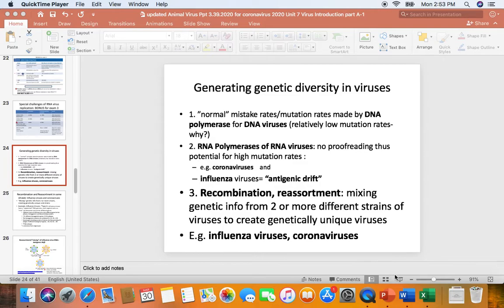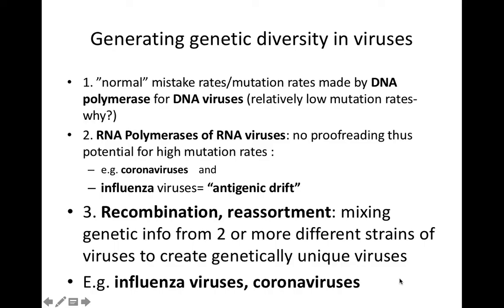They have an amazing number of strategies for increasing genetic diversity. With our DNA viruses, DNA viruses use DNA polymerases to make copies of the DNA virus genetic information. DNA polymerases proofread, so there's a relatively low mutation rate — maybe one wrong nucleotide, one mutation every 10 to the 9th to 10 to the 10th nucleotides.